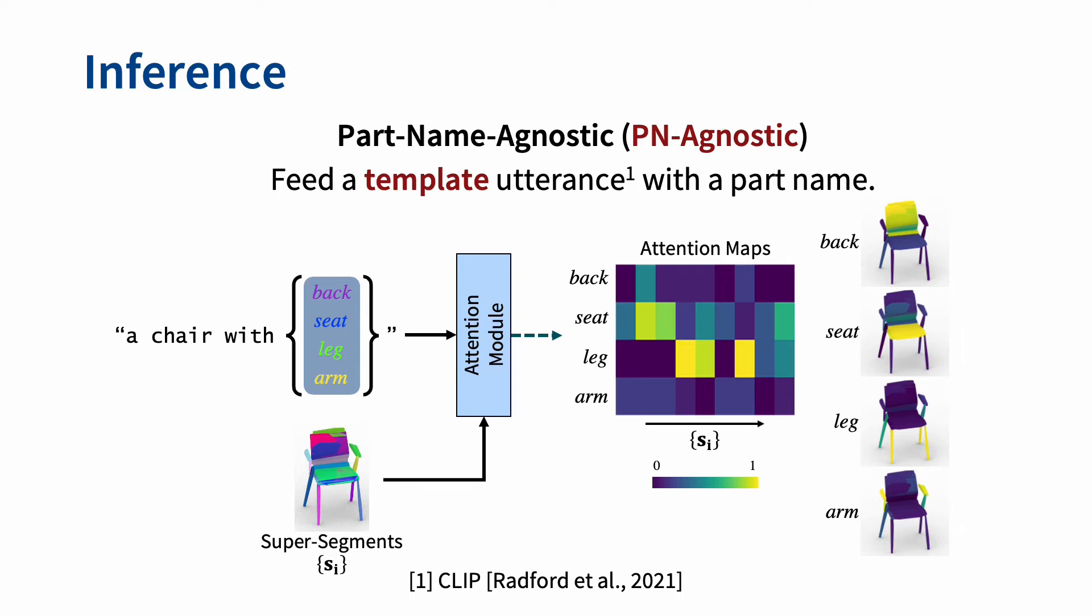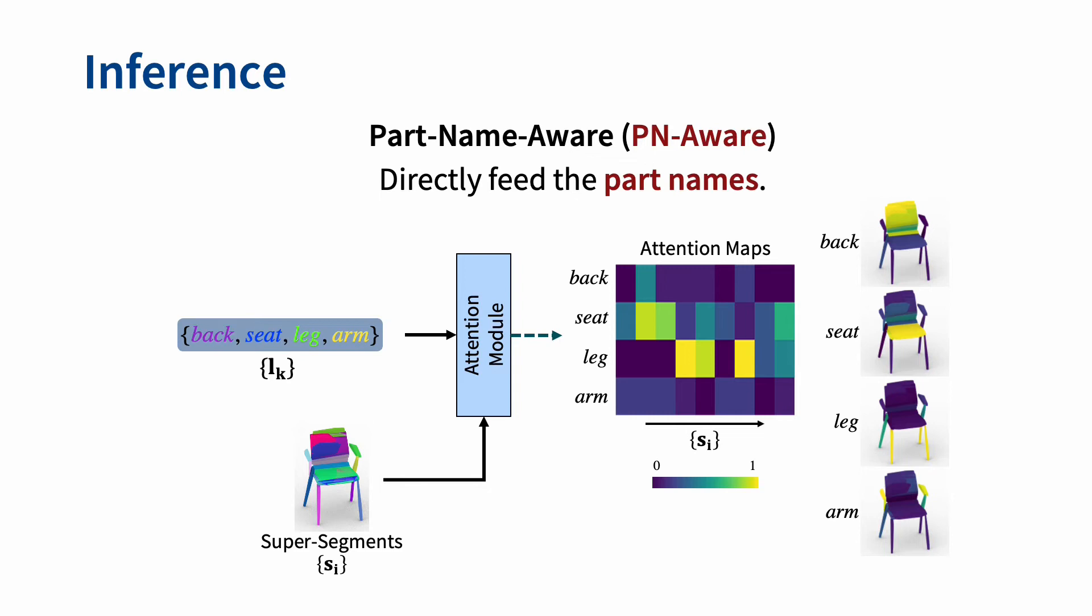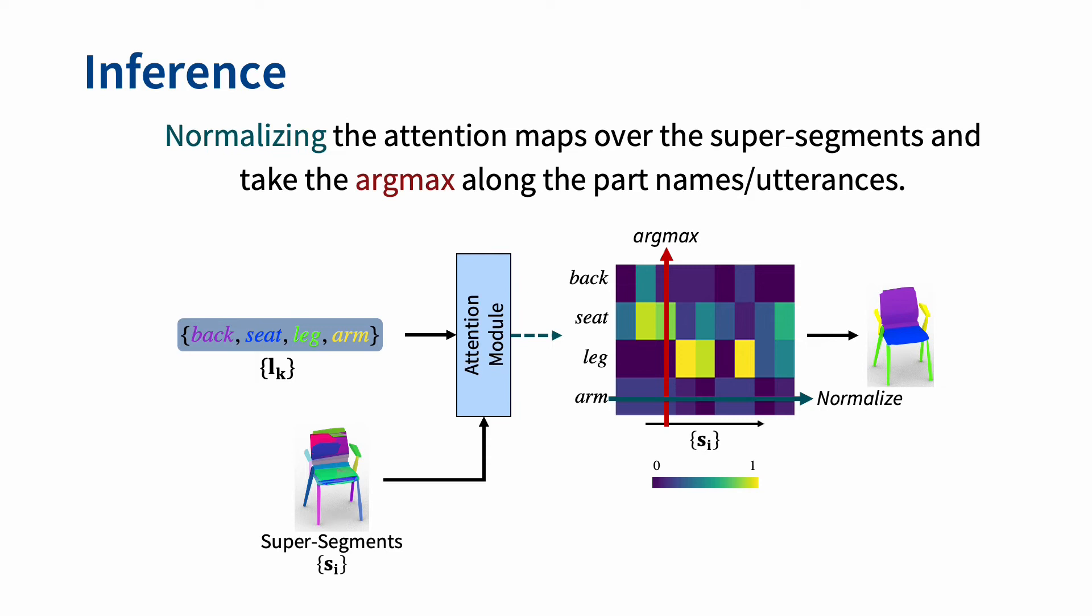In inference time, if PartGlot is trained without the part names, we use a template utterance with a part name to obtain the attention map of the part. In part name aware learning cases, we directly feed a part name instead of a template utterance with a 3D shape. The final part segments are obtained by normalizing the attention maps over the super segments and then taking the argmax of the attention maps along the part names or utterances.